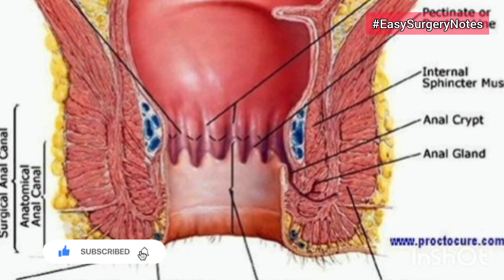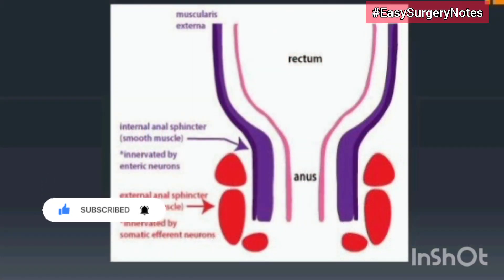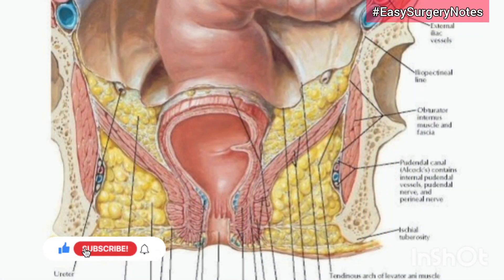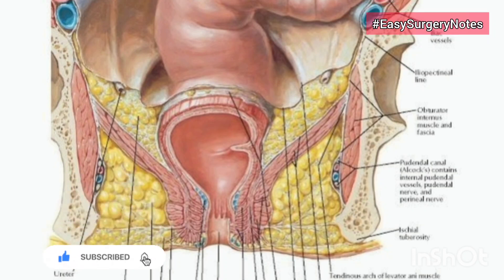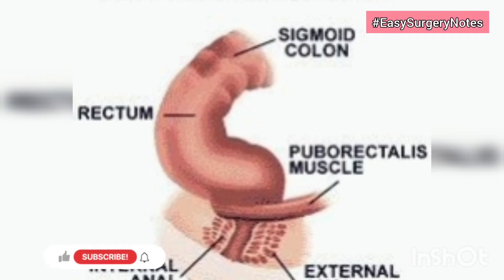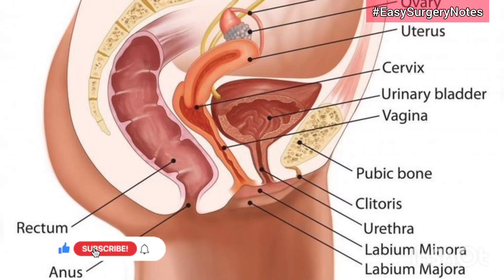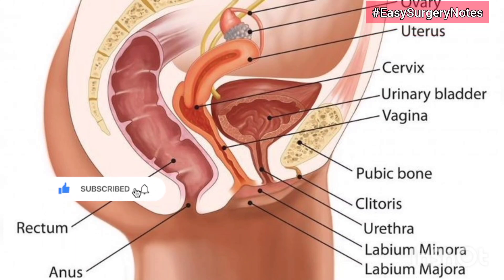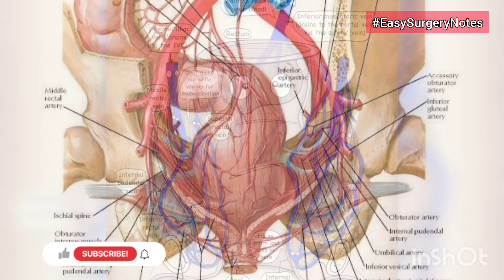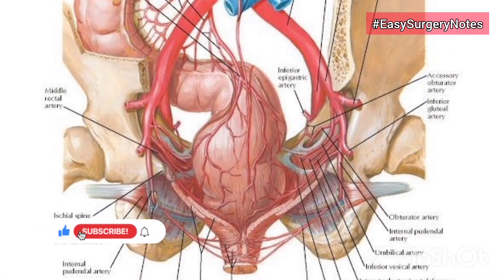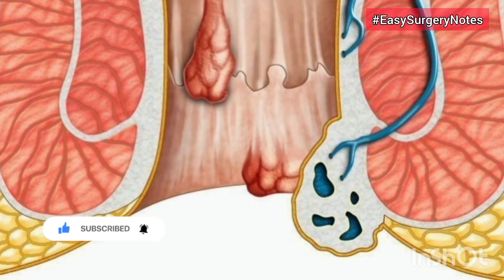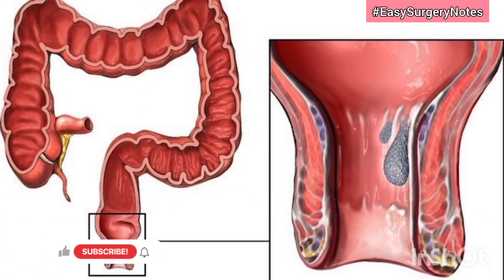Anorectal ring: this term was coined by Milligan and Morgan to denote the functionally important ring of muscle surrounding the junction of the rectum and anal canal. It is composed of the upper borders of the internal and external sphincters, completely encircling the junction, and on the posterior and lateral aspects by the strong puborectalis sling. Recognition of the anorectal ring is of great importance in the treatment of abscess and fistula, for its complete division inevitably results in rectal incontinence, while its preservation ensures no gross lack of control despite sacrifice of other sphincter musculature.